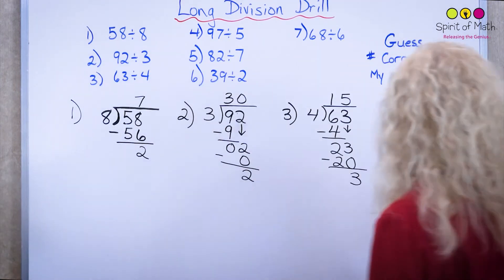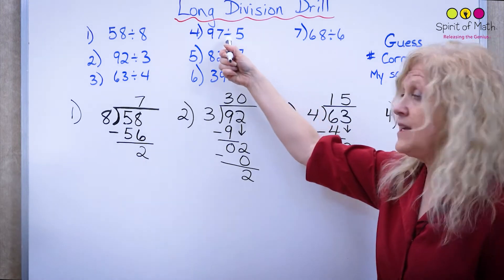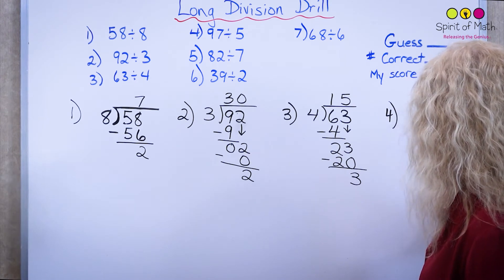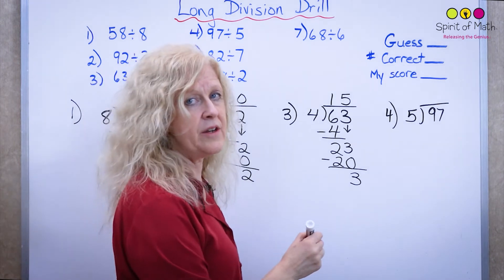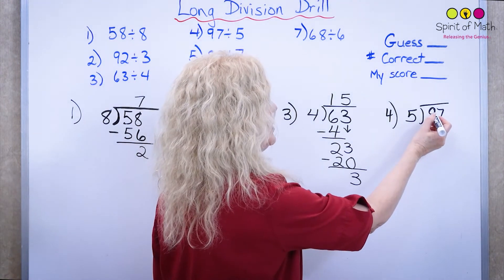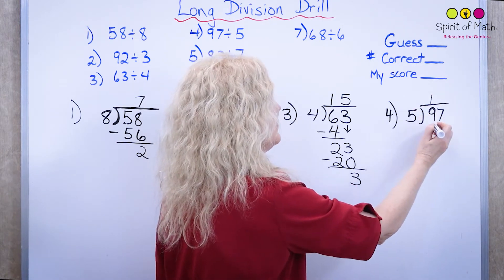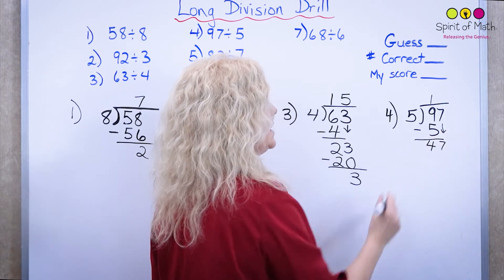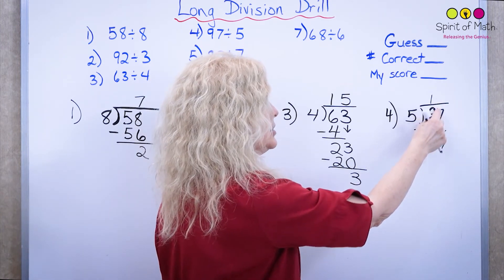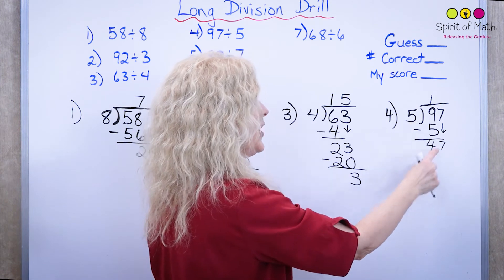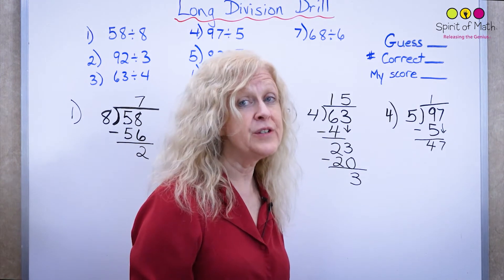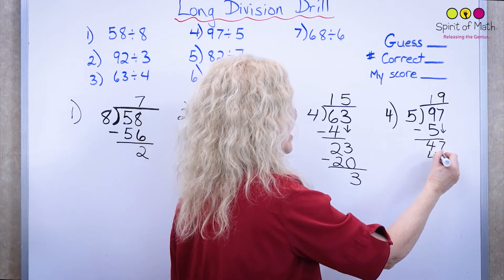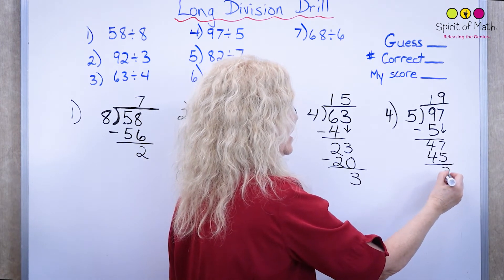Let's do another one. Let's do number 4. Number 4 says 97 divided by 5. So we're going to do 97 divided by 5 and let's do this together now. So when we do this, you have how many groups of 5 can you take out of 9? 1. 1 times 5 is 5. You subtract, you have remainder 4 and you bring down the 7. And now you have to keep going because you haven't quite finished. So now how many groups of 5 can you take out of 47? Well, 5 times 9 is 45. So that's the closest you're going to get. So we put 9 here. So 9 times 5 is 45. And then you subtract and you get 2 as a remainder.